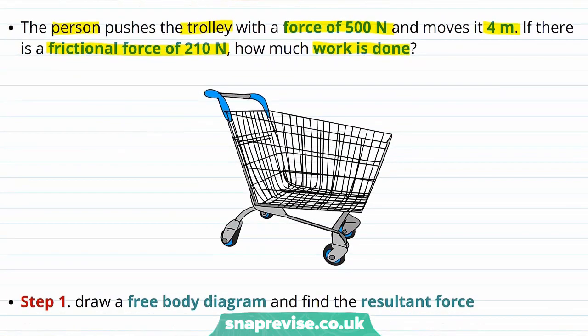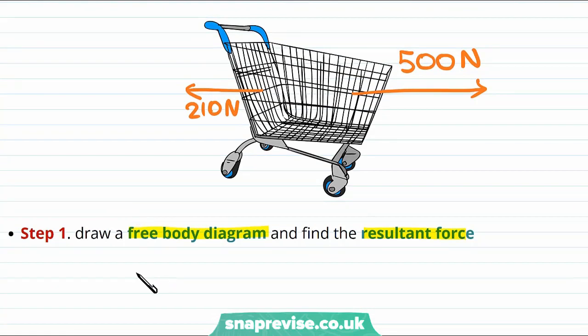Well the force that we're going to want to use in our equation for the work is the resultant force. So our first step is going to be to draw a free body diagram to find the resultant force. We know that there is a force of 500 Newtons pushing the trolley forwards, and there is a frictional force of 210 Newtons which resists this motion. Well using this free body diagram we can see that the resultant force is going to be equal to 500 Newtons minus 210 Newtons giving a resultant force of 290 Newtons.